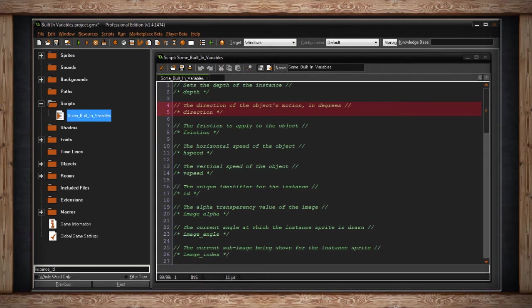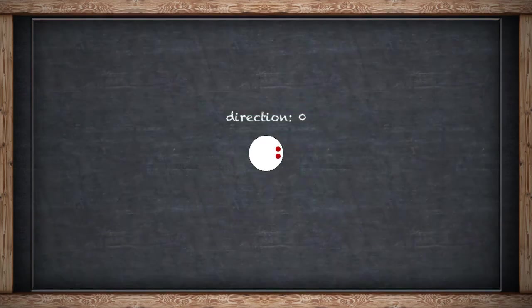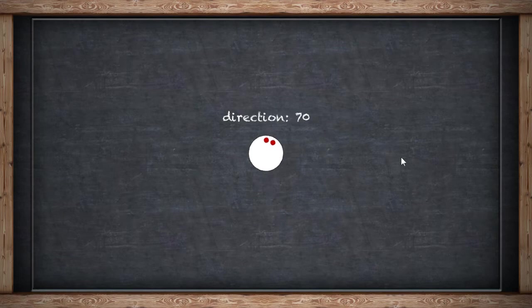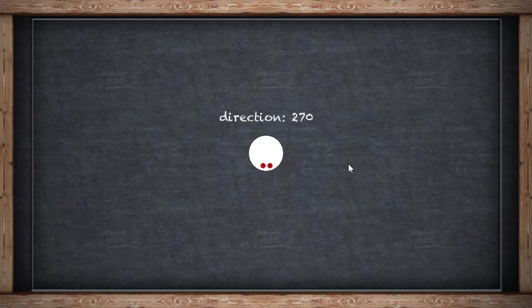Direction is the direction of the object's motion in degrees. A circle has a total of 360 degrees, so direction will be a value between 0 and 359.9. 360 is the equivalent of 0, which in GameMaker means your object is facing to the right. If your instance is looking up, it's 90 degrees. Looking to the left is 180 — the opposite of 0. And looking down is 270.